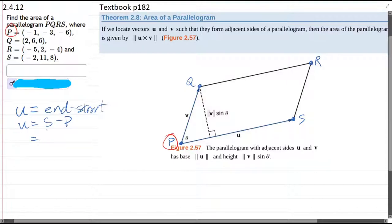So S is (-2, 11, 8) minus P, (-1, -3, -6). So we have -2 plus 1 is -1, 11 plus 3 is 14, 8 plus 6 is another 14. So that's the vector u = (-1, 14, 14).